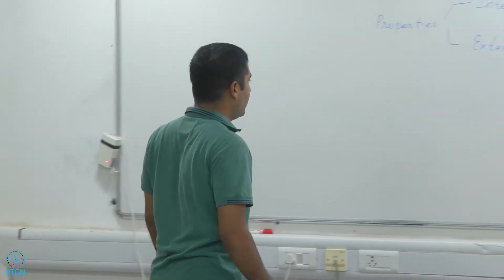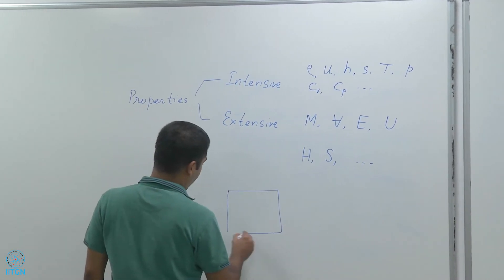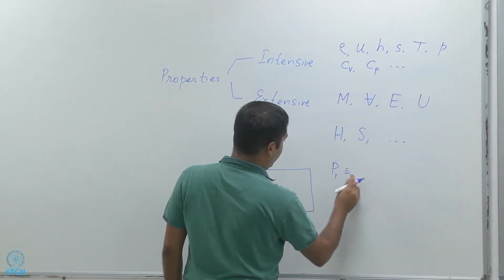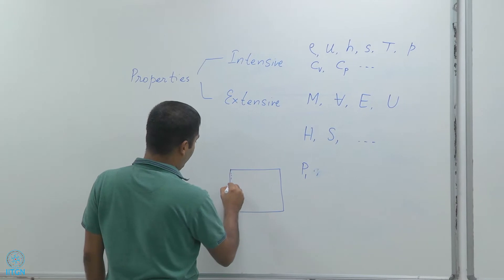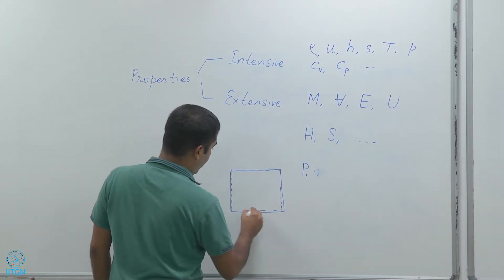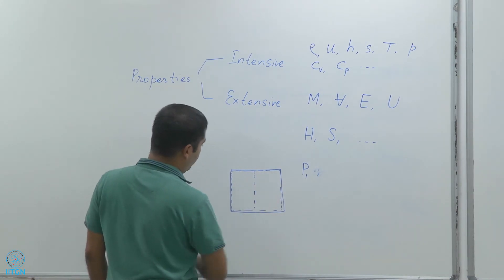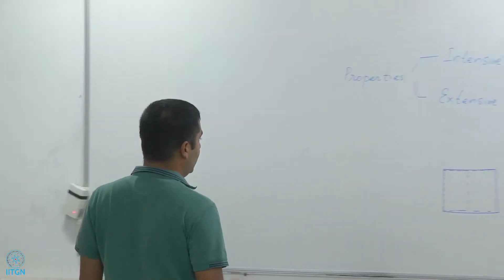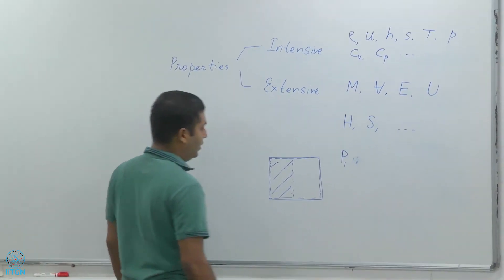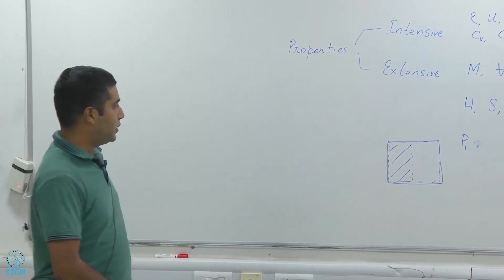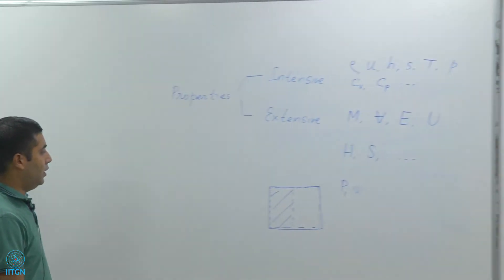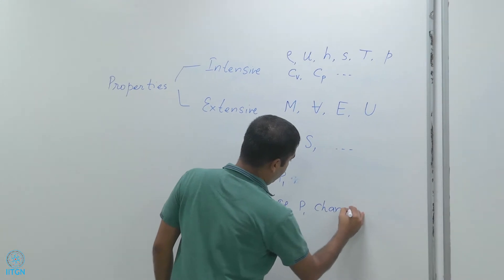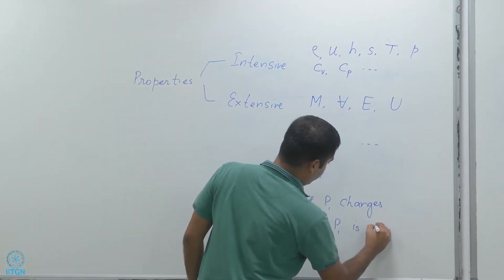How do we differentiate between extensive and intensive? There is a simple test: we imagine a system where a property has a value P1, and then as a thought experiment we divide the system into two — it does not have to be exactly half, you can divide it any which way you want. If the property for a portion of the system is different from the property for the entire system, then that is an extensive property. If P1 changes, that implies P1 is an extensive property.